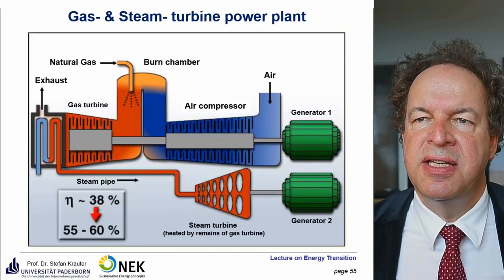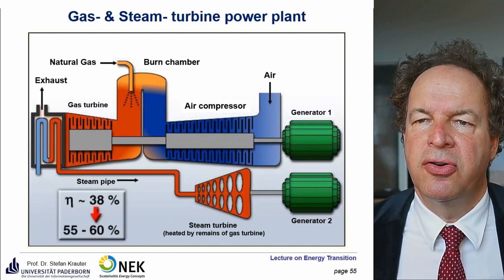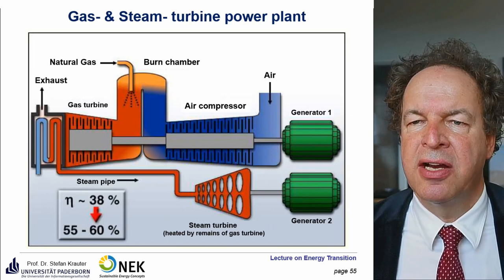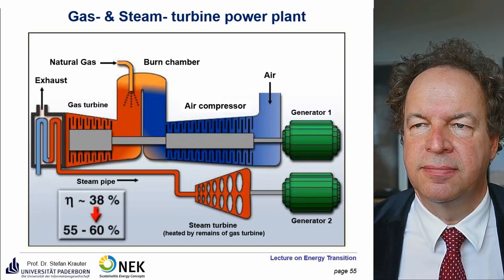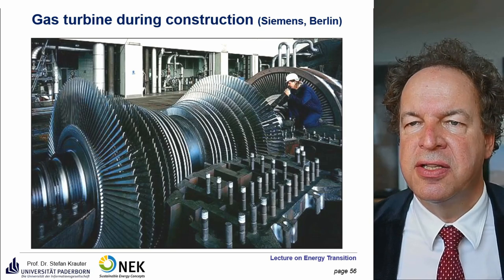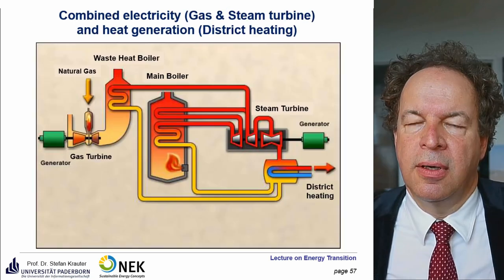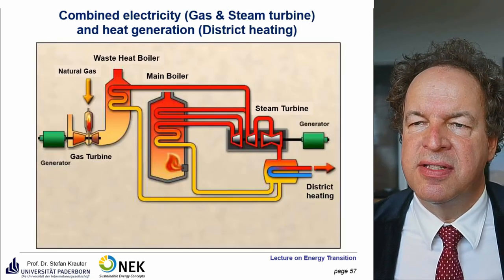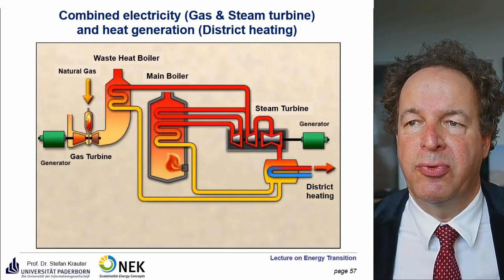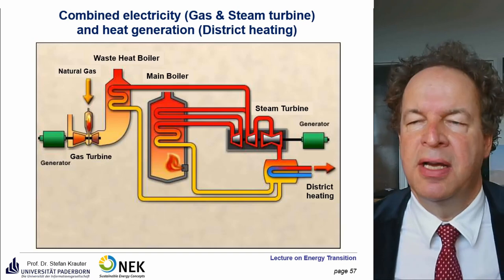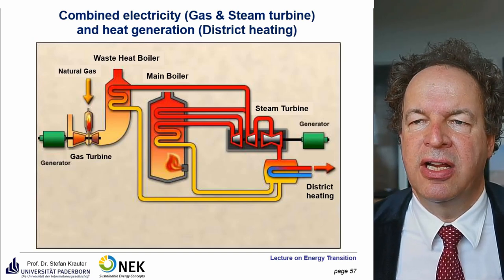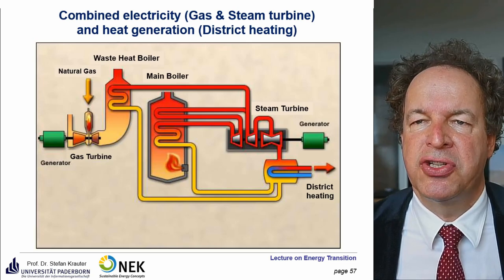A gas and steam combined power plant can significantly increase conversion efficiency by combining a gas turbine with a steam turbine — efficiency can go from 38% up to 55–60%. This Siemens gas turbine made in Berlin Moabit shows the different stages and compression levels. You can also combine gas and steam turbines with district heating. Since you add the electrical efficiency and the thermal efficiency — rather than multiplying them — you can achieve very high total efficiency.